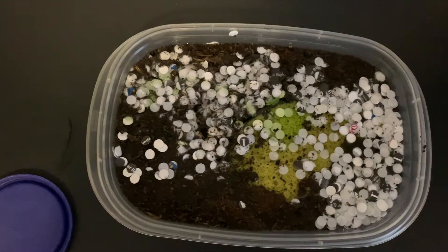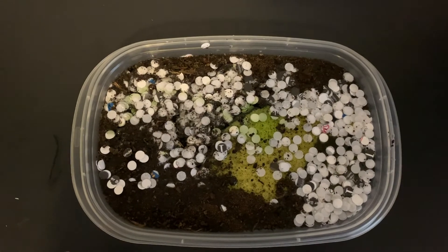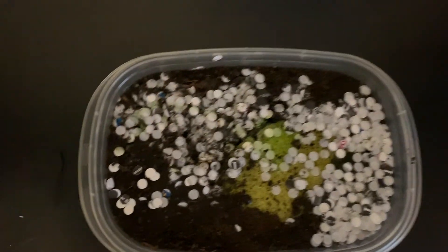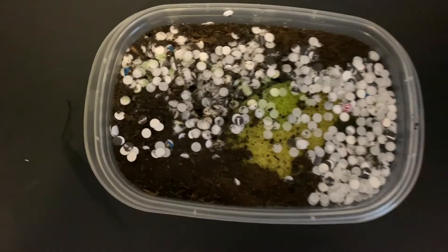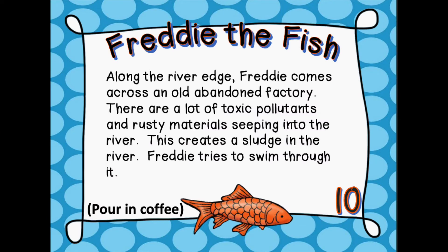Freddie is pretty determined, so he kept going. Now that he's passed by the acid rain, we're going to add the dish soap. It's kind of like sludge now — Freddie is almost completely covered, he can barely see where he's going, and there's lots of pollution in the water. He's having a really hard time here.